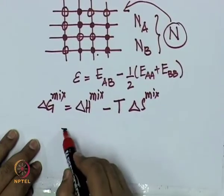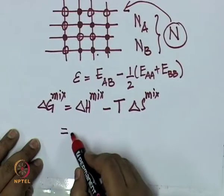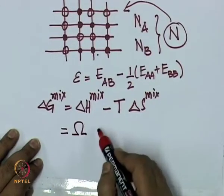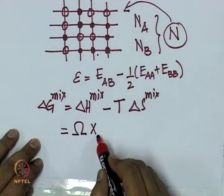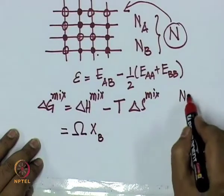Using the regular solution model, we showed this equals omega, the regular solution parameter, times composition xB, which is defined as NB by N,